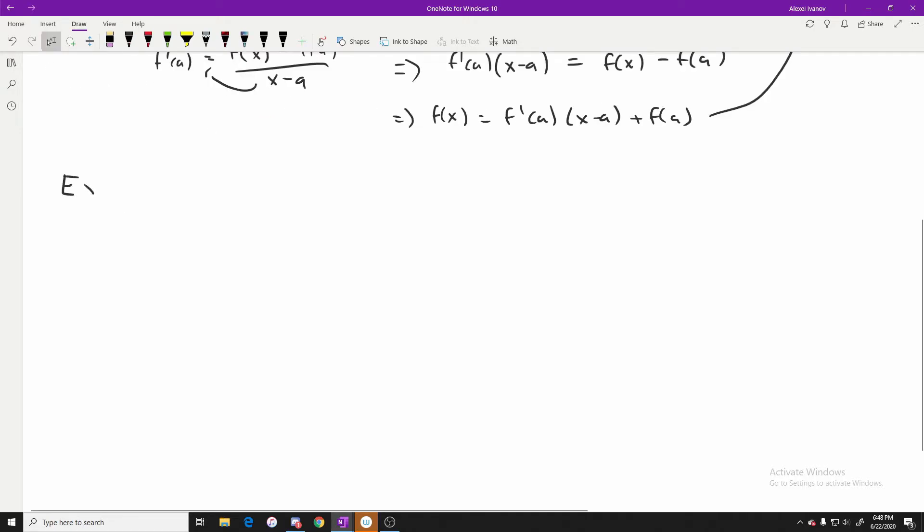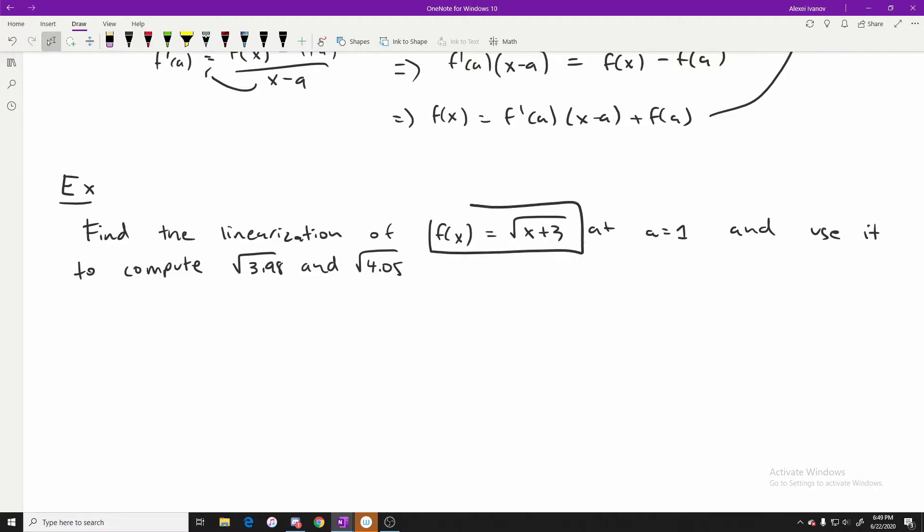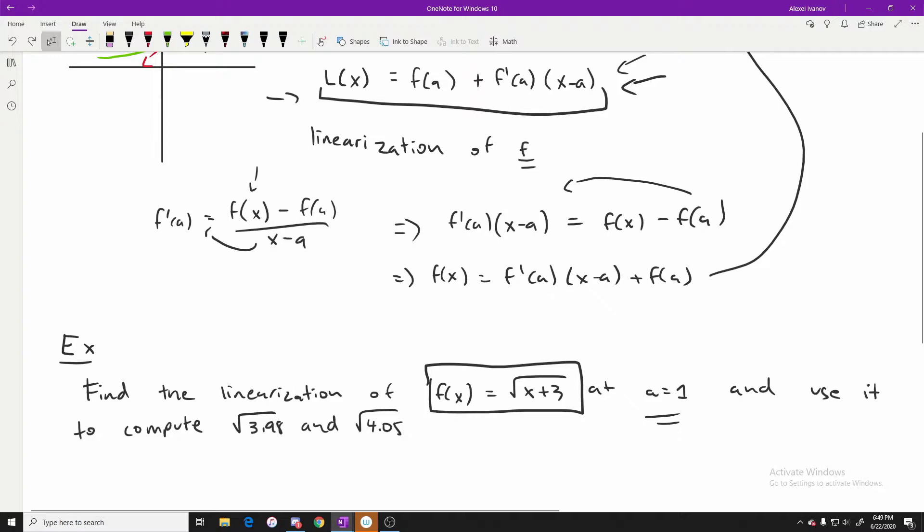Now as I said we can use the linearization of a function to estimate values at certain points. So here would be a good example of how we can apply this linearization and find some approximations. So here would be the example we would be asked to compute the linearization of this function right here. And then we would also be asked at a certain value and then use that to compute it at these, use this linearization essentially to estimate these two values.